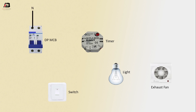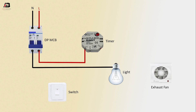Neutral connection input to DPMCB, Phase connection input to DPMCB. Phase connection output from DPMCB to Timer. Neutral connection output from DPMCB to connect Light. Neutral connection from Light to Exhaust Fan. Output connection from Exhaust Fan to connect Timer.